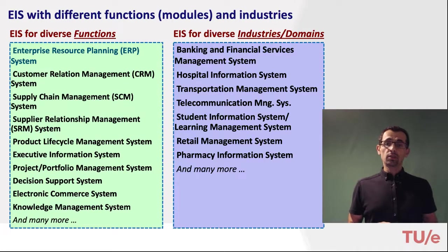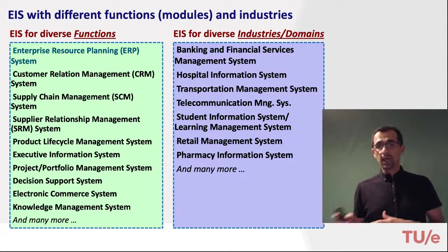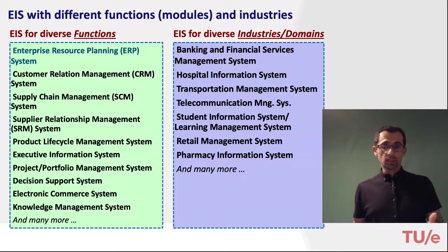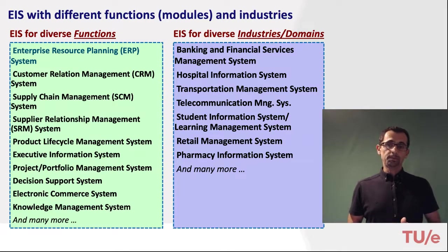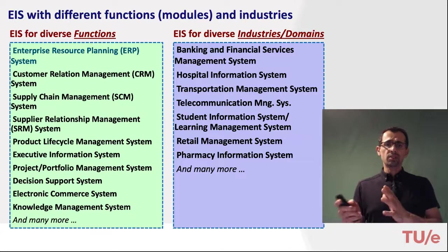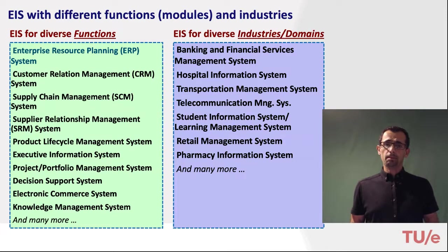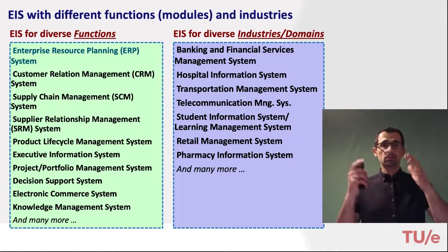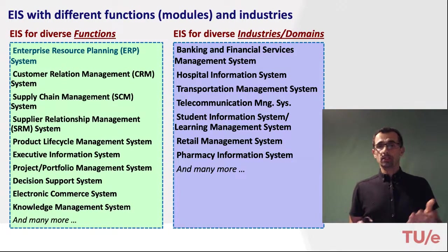On the other side, we also see systems tailored for the needs of companies in certain domains or industries — like banking and finance services management systems, hospital information systems, student information systems, or learning management systems like the Canvas system used at our university. Such systems do not necessarily have only domain-specific modules; they may also feature modules that support other processes. For example, a hospital information system likely includes modules for human resources, finance, or procurement.